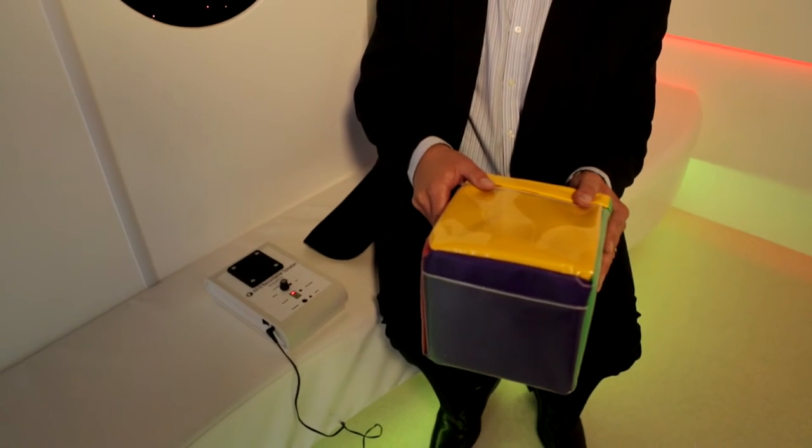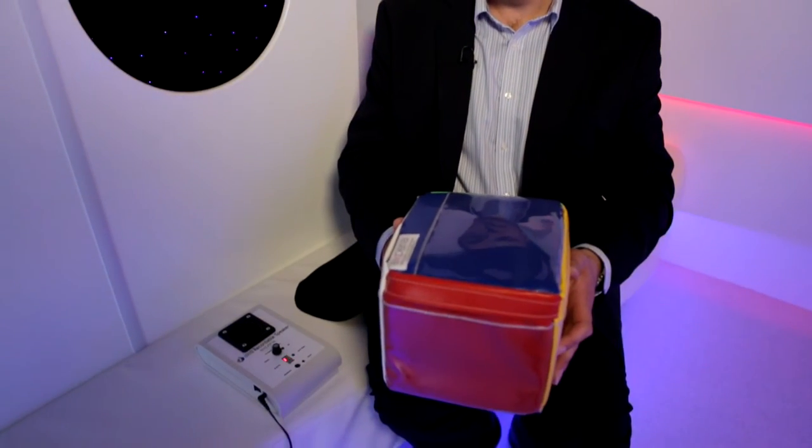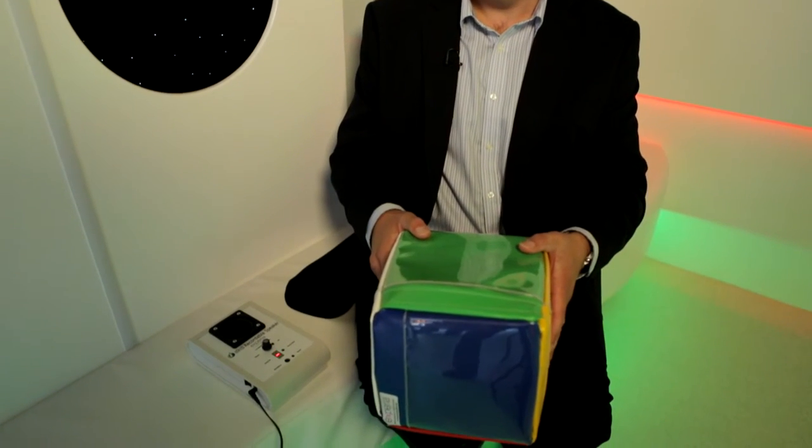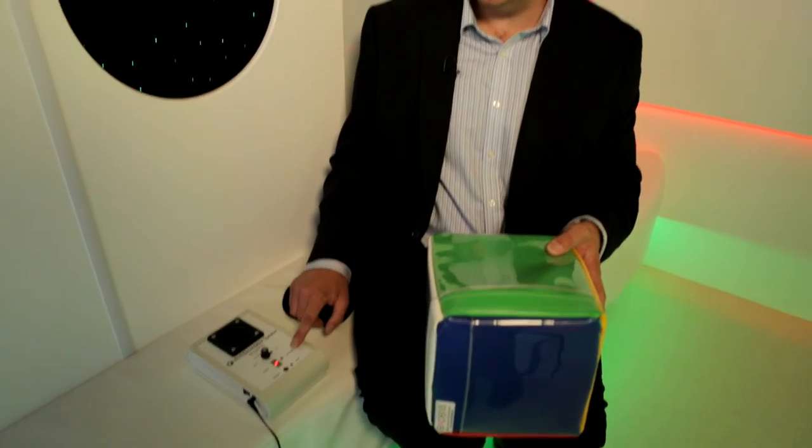Now we're on to sound selection number three which is household items. Simply turn the cube over again and we get different sounds. If we press the sound select button again, we go to number four and now we're into numbers.